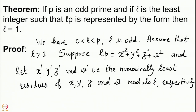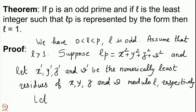Respectively means x′ is the numerically least residue of x, y′ is the numerically least residue of y, z′ is the numerically least residue of z, and w′ is the numerically least residue of w. These x′, y′, z′, w′ are some integers. Let n be the sum of their squares.